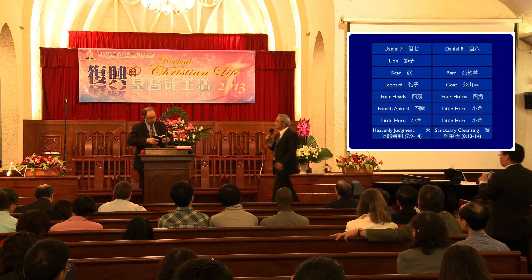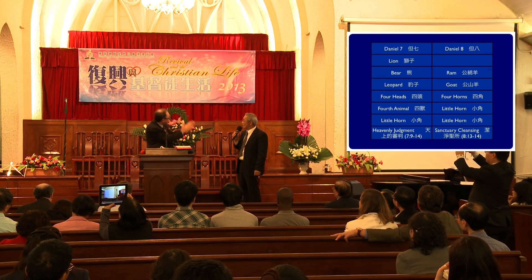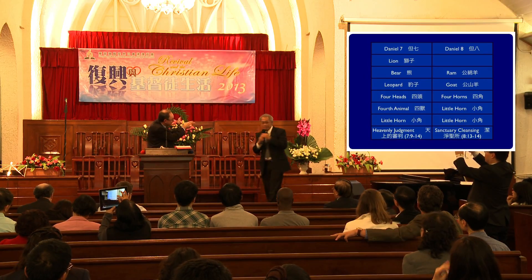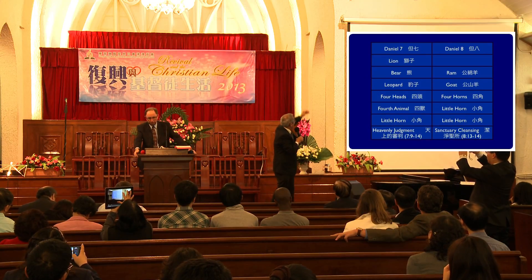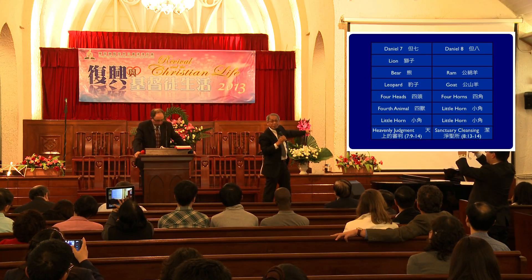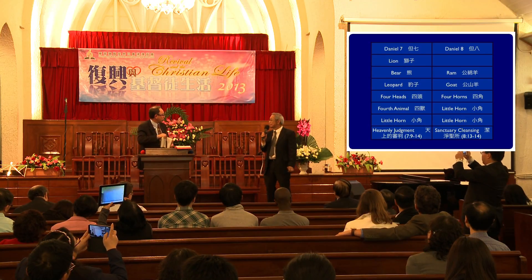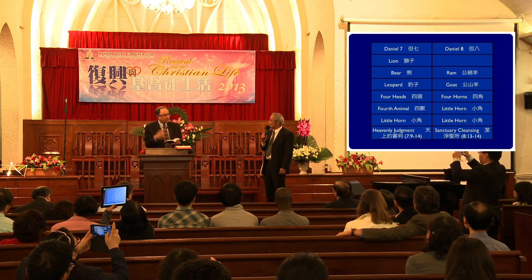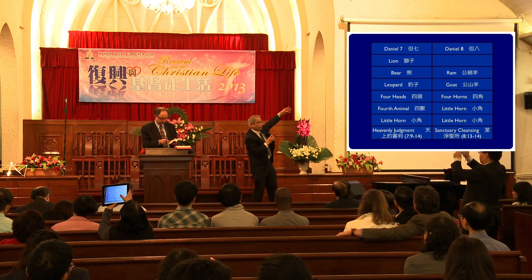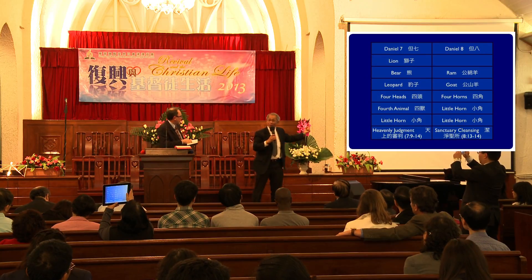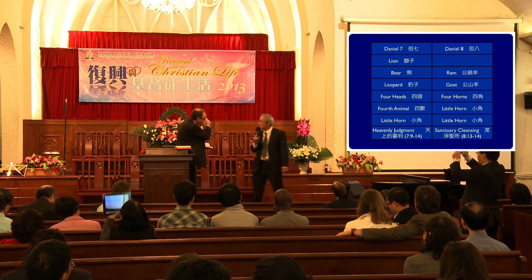Now the climax — the most important thing in Daniel 7 is the last scene: the heavenly judgment. In this heavenly judgment, we have something really interesting happening. Let's go to Daniel 7, verses 9 through 14.